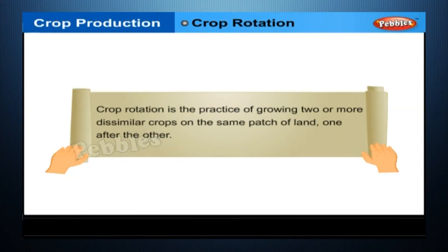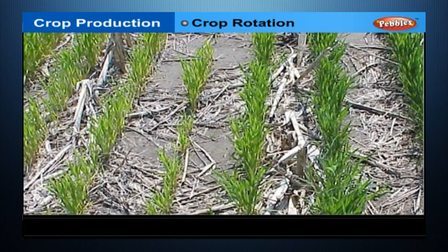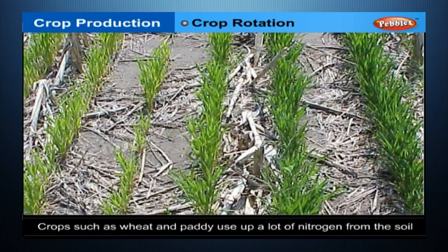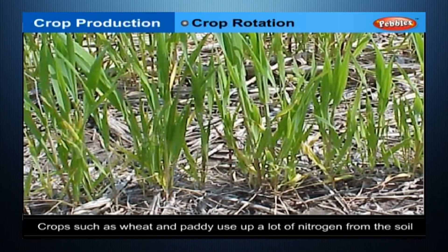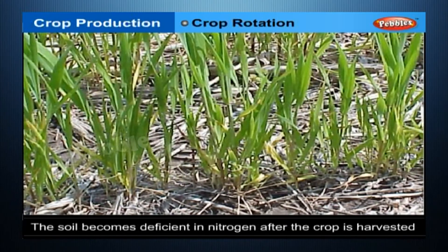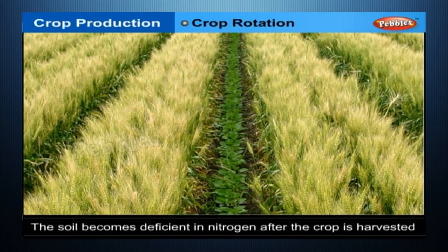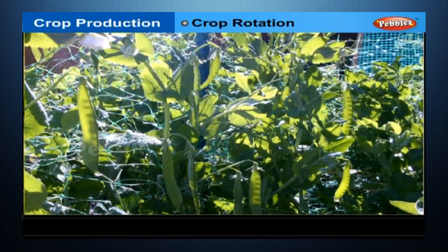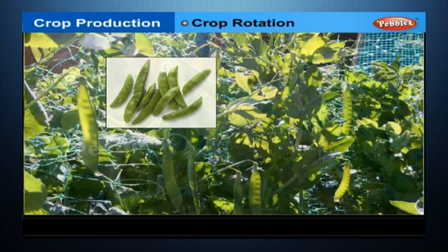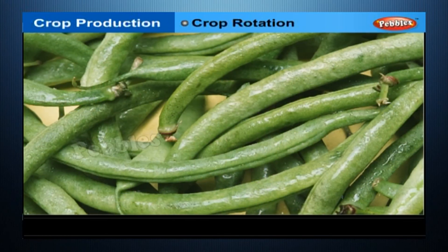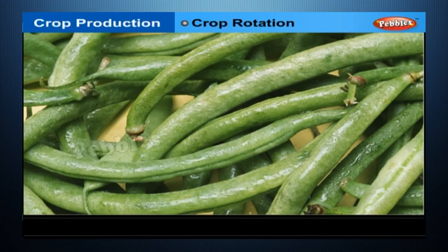Crop Rotation: crop rotation is the practice of growing two or more dissimilar crops on the same patch of land one after the other. For example, crops such as wheat and paddy use up a lot of nitrogen from the soil, making it nitrogen-deficient after harvest. This can be replenished naturally if leguminous plants such as peas, soya beans or green beans are sown after wheat or paddy.